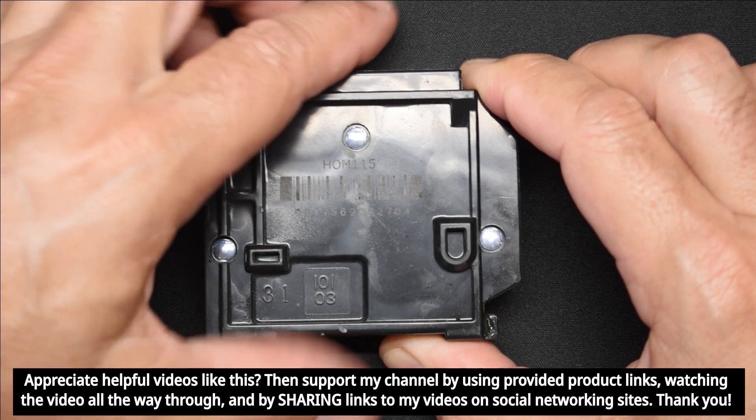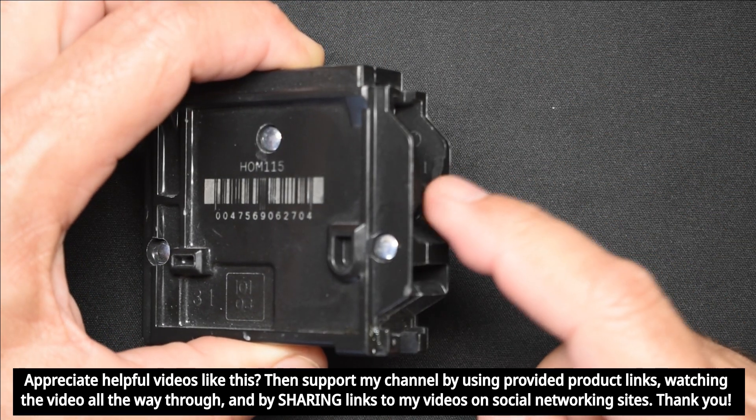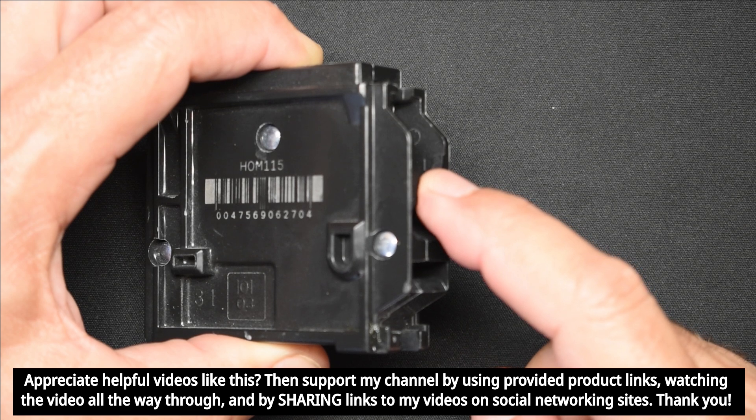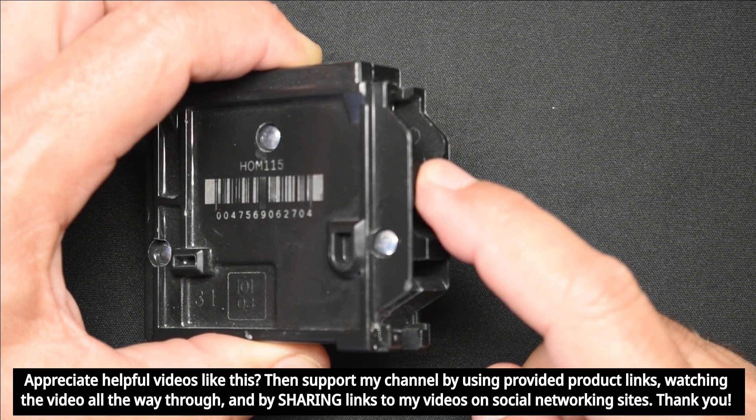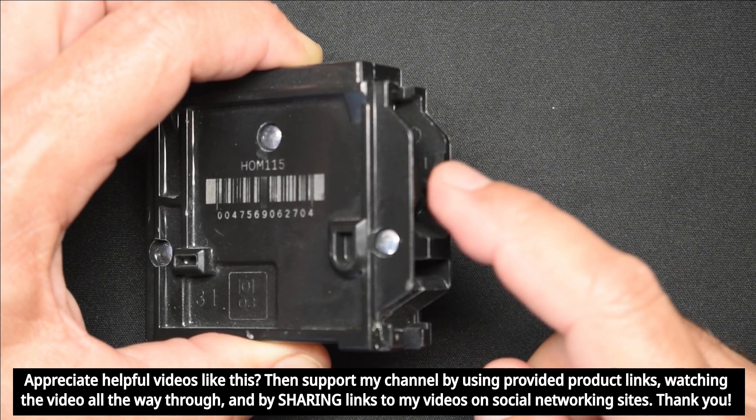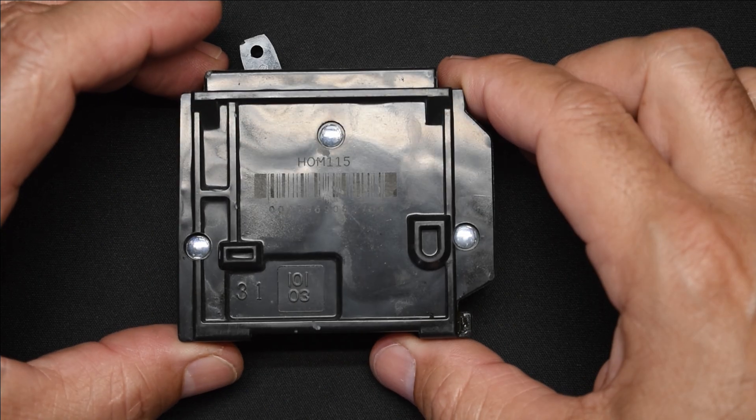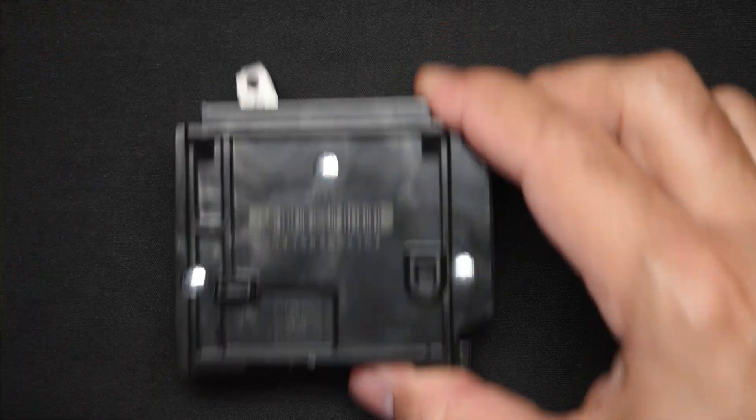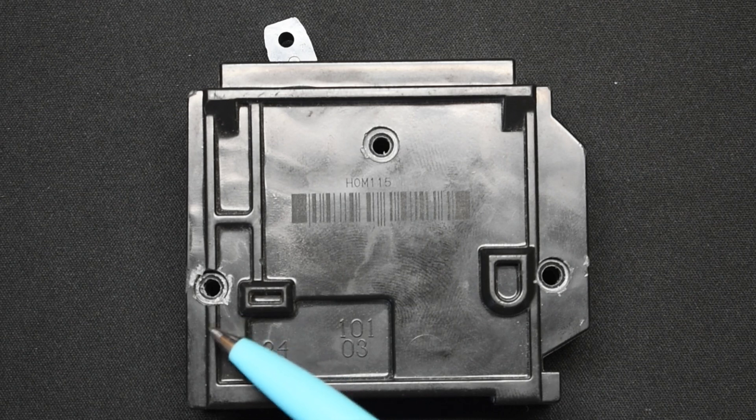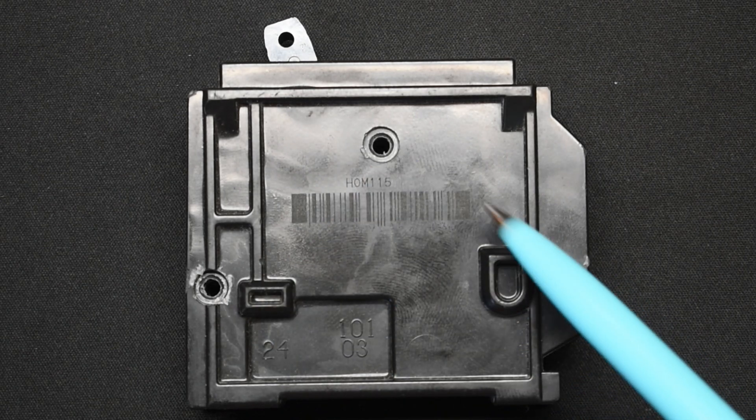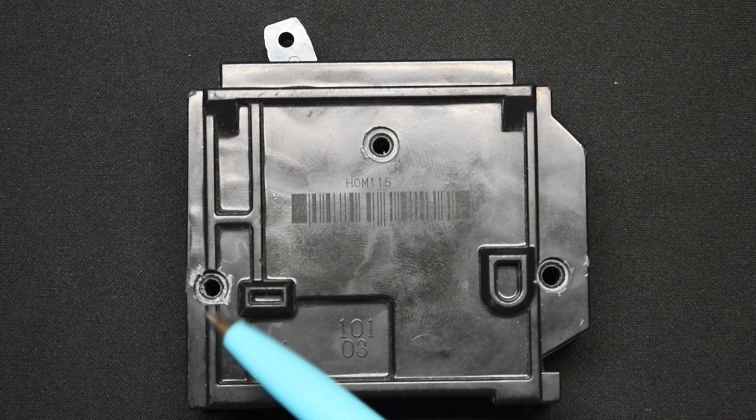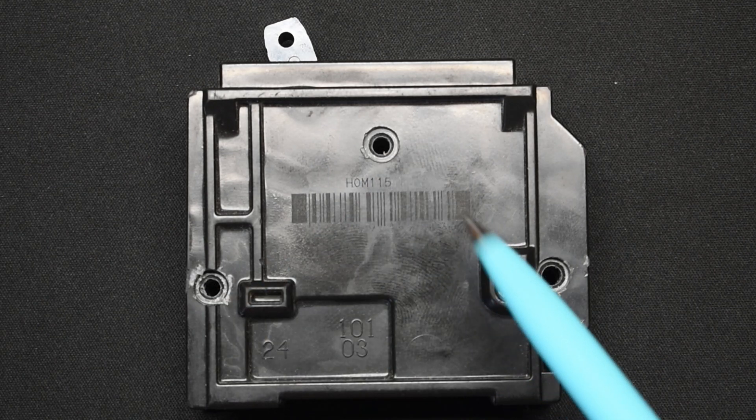Sometimes it may lock in but then there's no power to the branch circuit. If you measure between the screw and the electrical panel's ground or neutral, you're going to see there's no voltage. So let me open one up to show you what the problem is. Removing the cover on the circuit breaker is very simple. This is a faulty circuit breaker - all I had to do is drill out the three rivets.